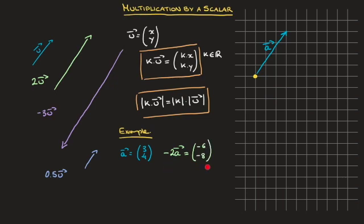If I draw the vector negative 2a, starting from a point on the grid, I move 6 units to the left (since it's negative 6) and then 8 units downwards. That's the vector negative 2a. Although I haven't drawn these vectors with a ruler, you can appreciate that the two vectors are indeed parallel. The green vector is 2 times longer than the blue one, and it points in the opposite direction of a — which confirms everything we said previously.